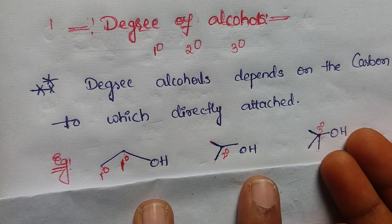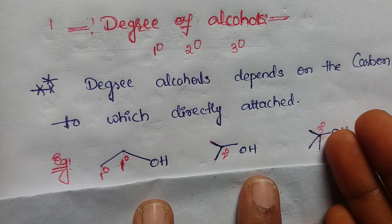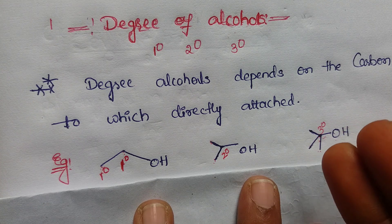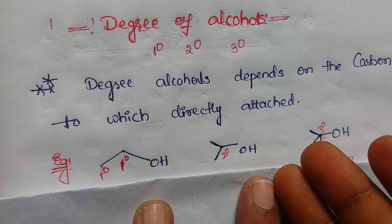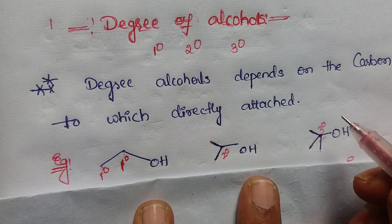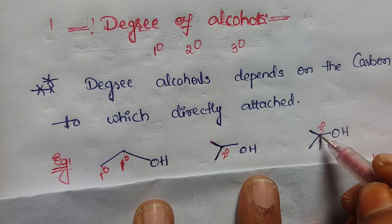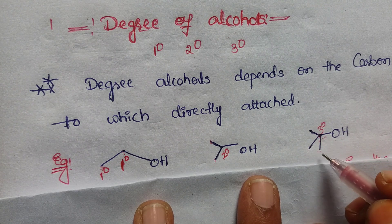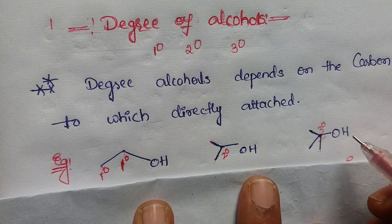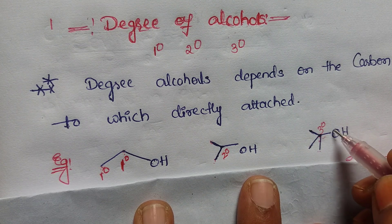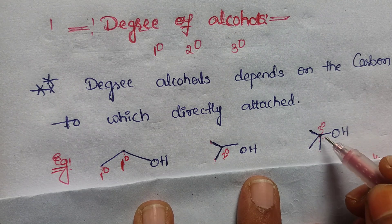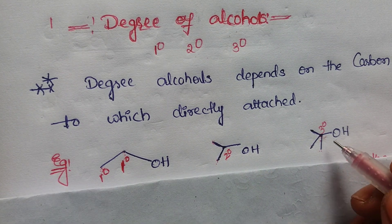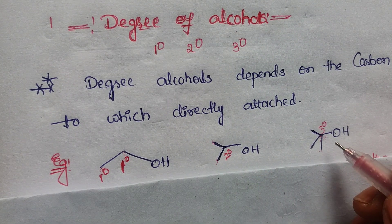Tertiary alcohols means if the hydroxyl group is attached to the tertiary carbon, it is called tertiary alcohols. Here this carbon is attached to three other carbon atoms, so it is the tertiary carbon. Then the hydroxyl group attached to this tertiary carbon gives the tertiary alcohols.